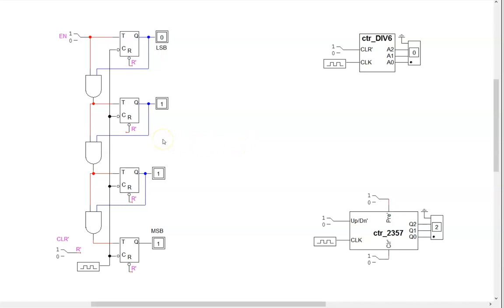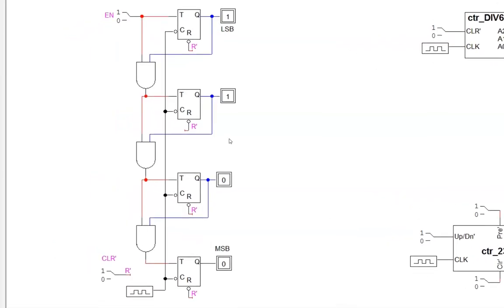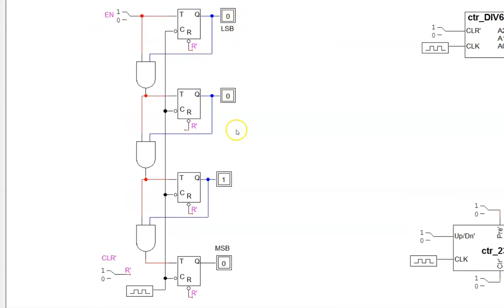First, let's look at a few counters in action. We'll dive into the design details in later videos, but for now, just focus on the overall behavior. Here we have a 4-bit counter. It uses four flip-flops, one for each bit.